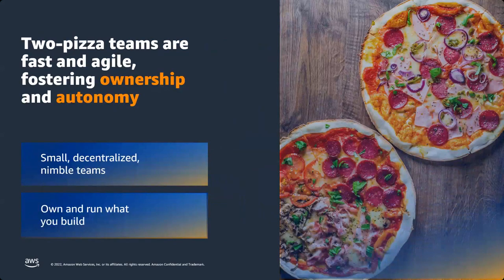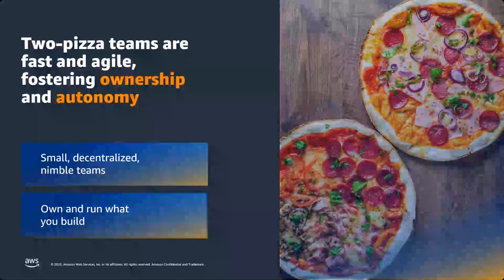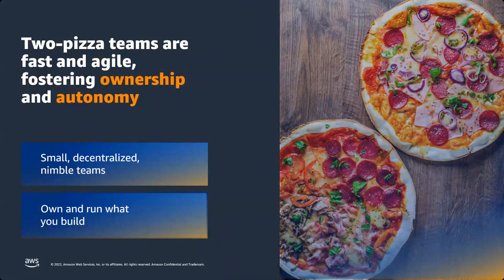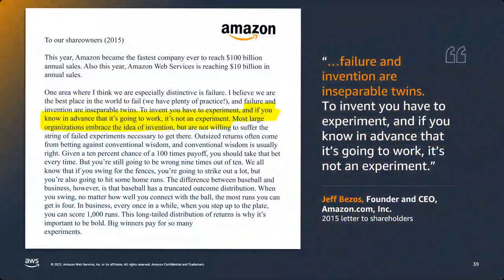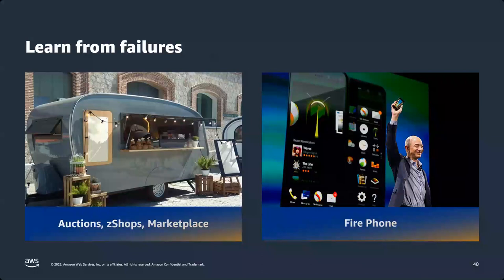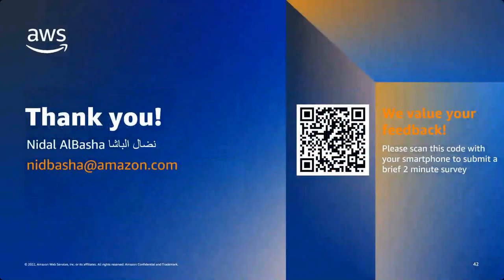We have something called the two-pizza team. It means a team of four to five people you can feed with two pizzas — a small decentralized unit with authority to own and develop independently. You give four or five multi-disciplinary people a task and they run and innovate with it. As we say: if you know it's going to work, it's not an experiment. We had our failures and we should accept failures. Now 33% of our revenue comes from the marketplace. We learned from the Fire Phone and now we have Kindle.